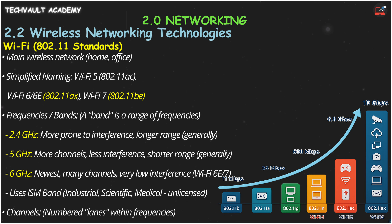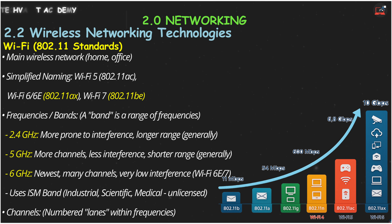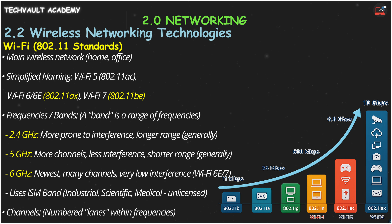The standards used to be confusing, like 802.11ac, but now it's simpler. Wi-Fi 5 was 802.11ac, Wi-Fi 6 and 6E was 802.11ax, and Wi-Fi 7 is 802.11be.